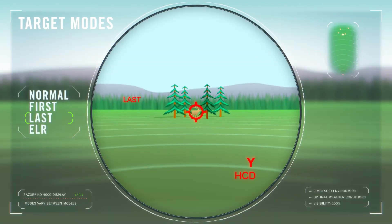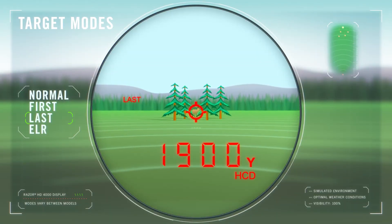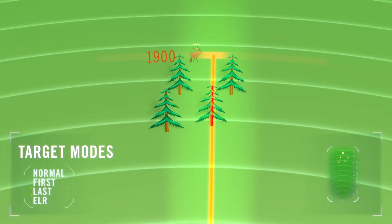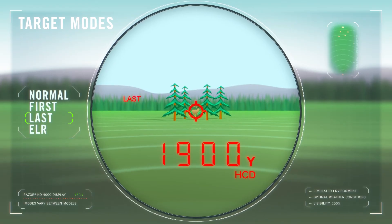Last mode displays the farthest distance when ranging. Last mode is ideal for ranging a specific target behind a group of objects like brush, trees, or rocks.